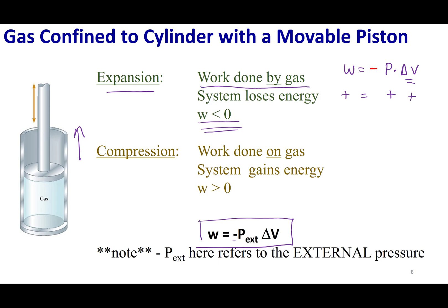Remember to include that negative sign. Also note that the pressure in this equation is the external pressure — the pressure on the outside of the cylinder, not the pressure of the gas. You can verify this equation works by applying the same logic to a compression, where the piston squeezes down on the gas, and you'll see all the signs make sense.